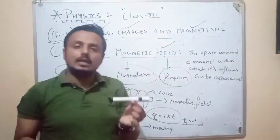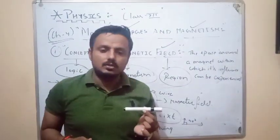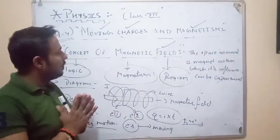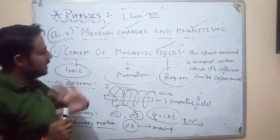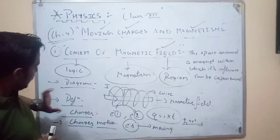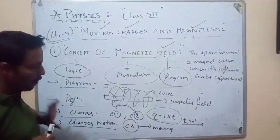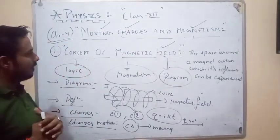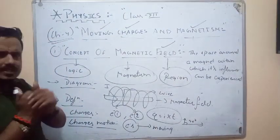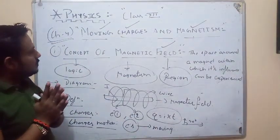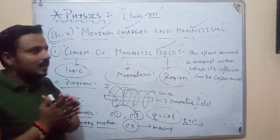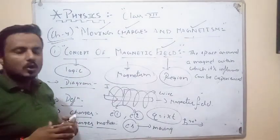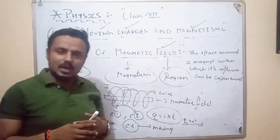If the magnetic field is acting in the horizontal direction, it will act in the vertical direction — meaning it is perpendicular. So I think the first concept and first topic we have covered. The diagram, definition, and two points — it's enough for four to five marks. Thank you for today. We will continue with the further topics.